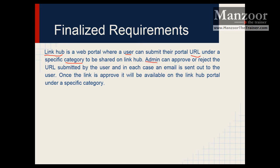Now admin will come into picture. An admin can approve or reject the URL submitted by the user. In each case an email is sent out to the user whether it is approved or rejected. Once the link is approved it will be available on the Link Hub portal under a specific category. So this is a very simple kind of URL sharing portal.